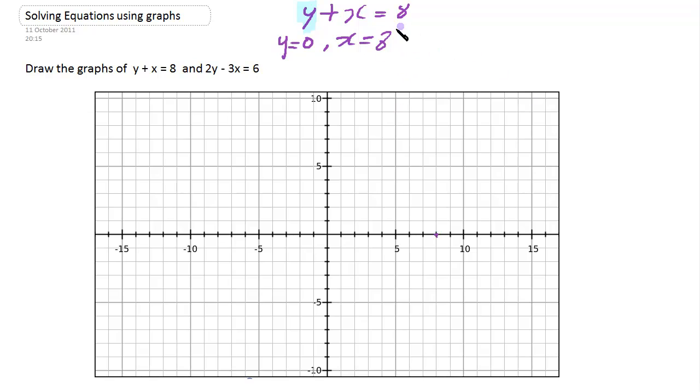Now if we let x equal zero, this becomes zero so y must equal 8, and we can put a little cross here. We could pick any combination of values that add to 8, like 5 and 3, so we could plot that if we wanted.